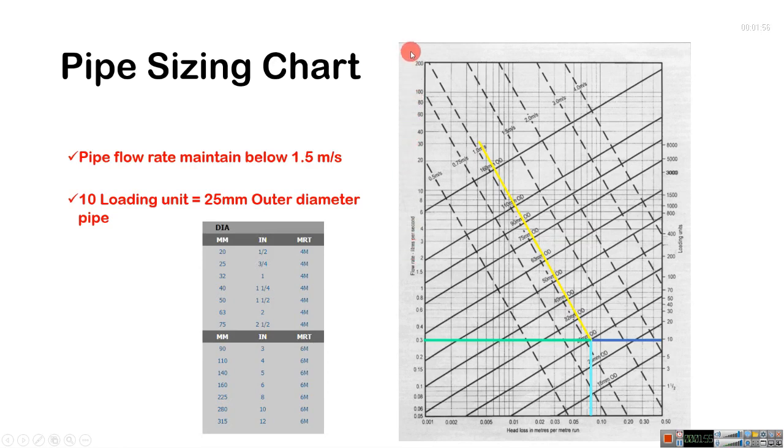See in this code we have this chart. There is a loading unit value, flow rate in liters per minute, and head loss in meters per meter run. This head loss we use to calculate friction loss of pipe. In another video I will explain you how to calculate pump. Here I will only show you how to size a pipe.